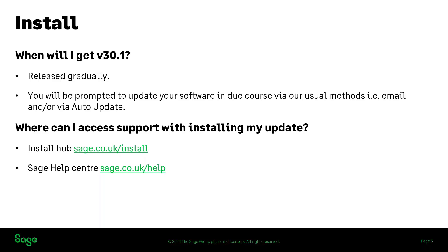You can get access to the install hub, and if you've got the handout downloaded, you can click on those green hyperlinks. If you don't, you can just type in sage.co.uk/install or /help into your browser and you can visit those as well.